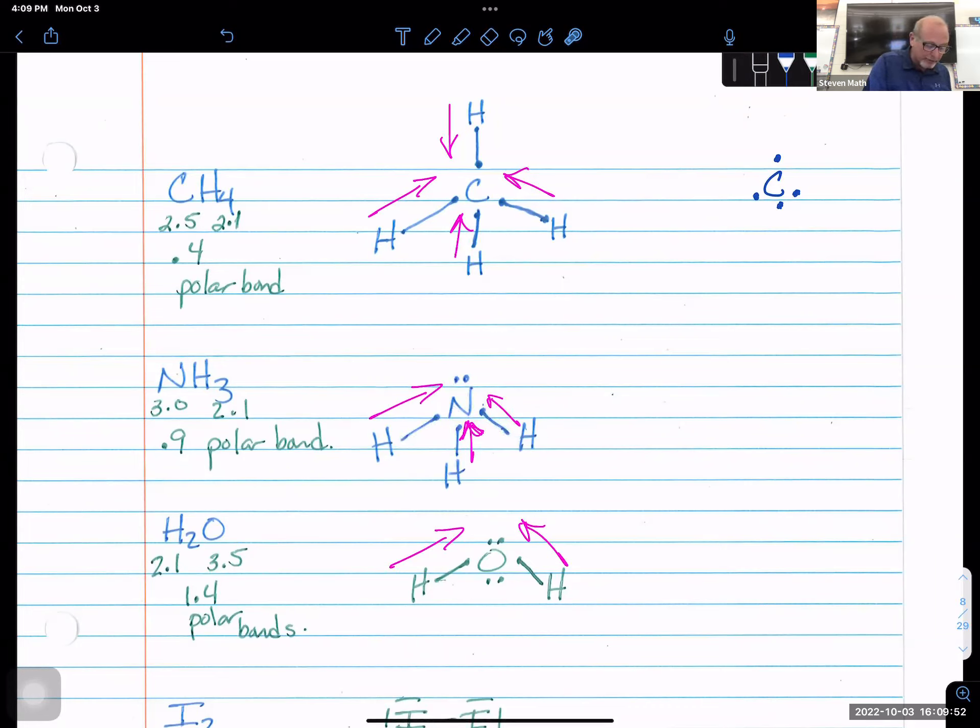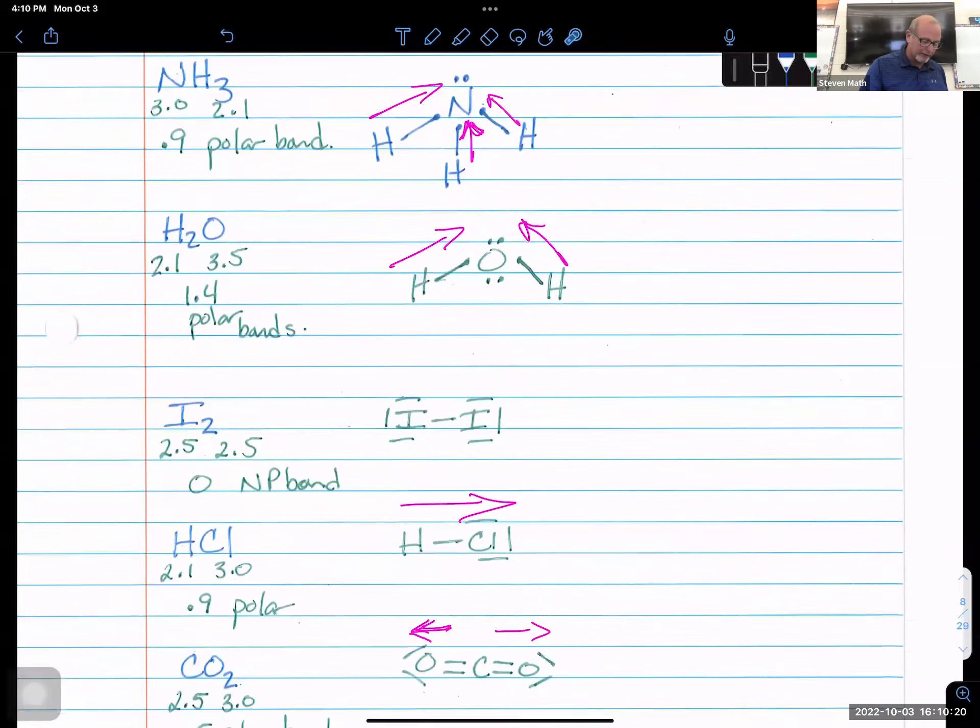When we're done, if we notice, nitrogen now has 2, 4, 6, 8 valence electrons. That's a good model. The central atom forms more bonds and the more electronegative element gets an octet. That's a good Lewis structure. That's what that tells me. The more electronegative gets an octet, we're drawing very good Lewis structures here.